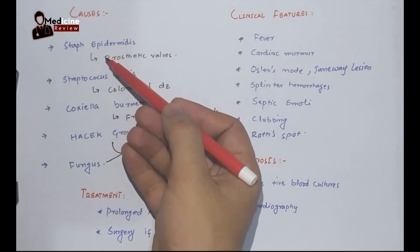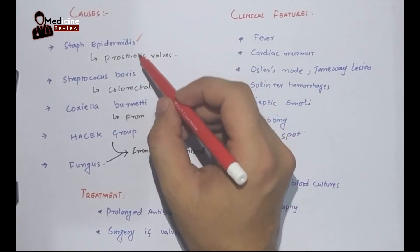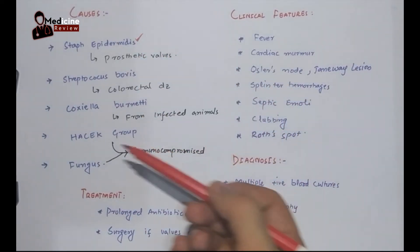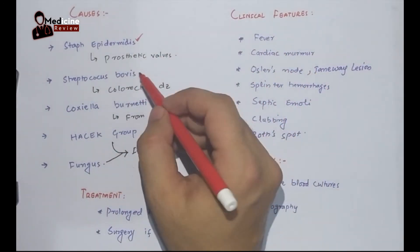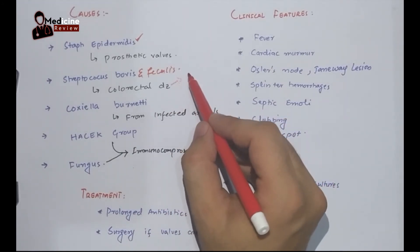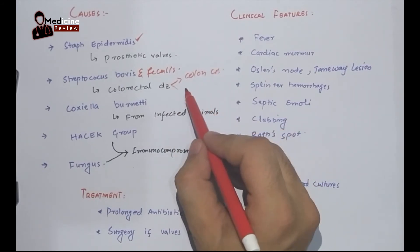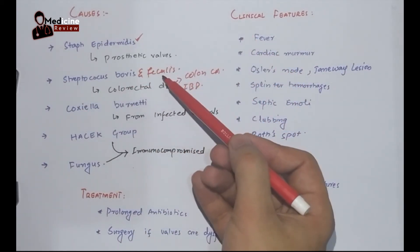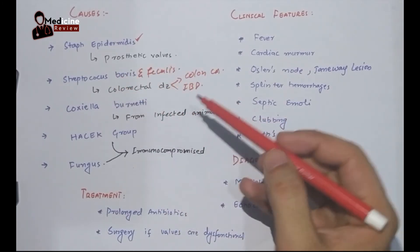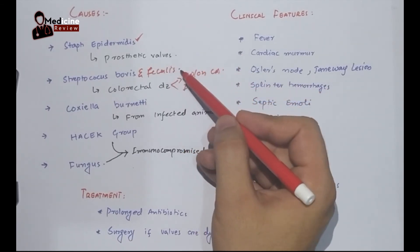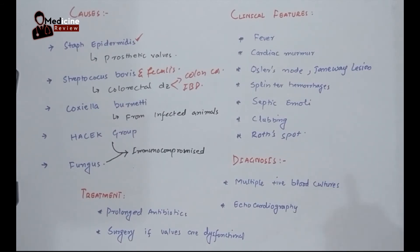Other causes of infective endocarditis include Staphylococcus epidermidis, which is important because it can damage prosthetic valves — so if a patient with a prosthetic valve presents with infective endocarditis, think of Staph epidermidis. Streptococcus bovis and Enterococcus faecalis are associated with serious colorectal disease such as colon cancer, colorectal carcinoma, or inflammatory bowel disease. These organisms reside in the colon and can cross the colon wall into the bloodstream to cause infective endocarditis.